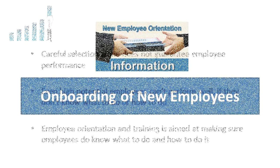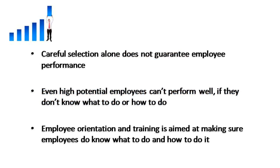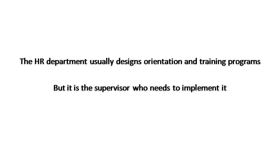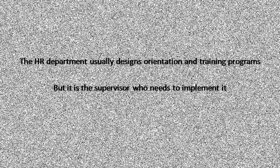Orienting and onboarding new employees is essential. Carefully selecting employees doesn't guarantee they'll perform effectively. Even high-potential employees can't do their jobs if they don't know what to do or how to do it. Making sure employees know what to do and how to do it is the purpose of orientation and training. The Human Resources Department usually designs orientation and training programs, but it is the supervisor who implements it, doing most of the day-to-day orienting and training. Every manager therefore needs to know how to orient and train employees.